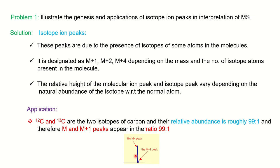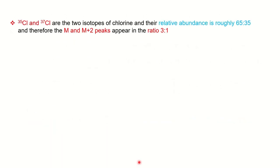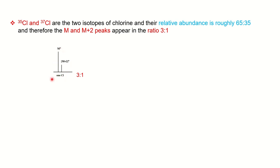The M+1 peak is only 1% of the major peak, and that is because of the carbon-13 isotope. Now, chlorine and bromine isotopes are very important. To find out the number and type of isotopes in an unknown molecule, we use the isotopic abundance technique. Chlorine-35 and its isotope chlorine-37 have a relative abundance in nature of 65:35. Since the mass difference is 2, you will find M and M+2 peaks in a ratio of 3:1 — 3 for the chlorine-35 molecular ion peak and 1 for the M+2 peak.